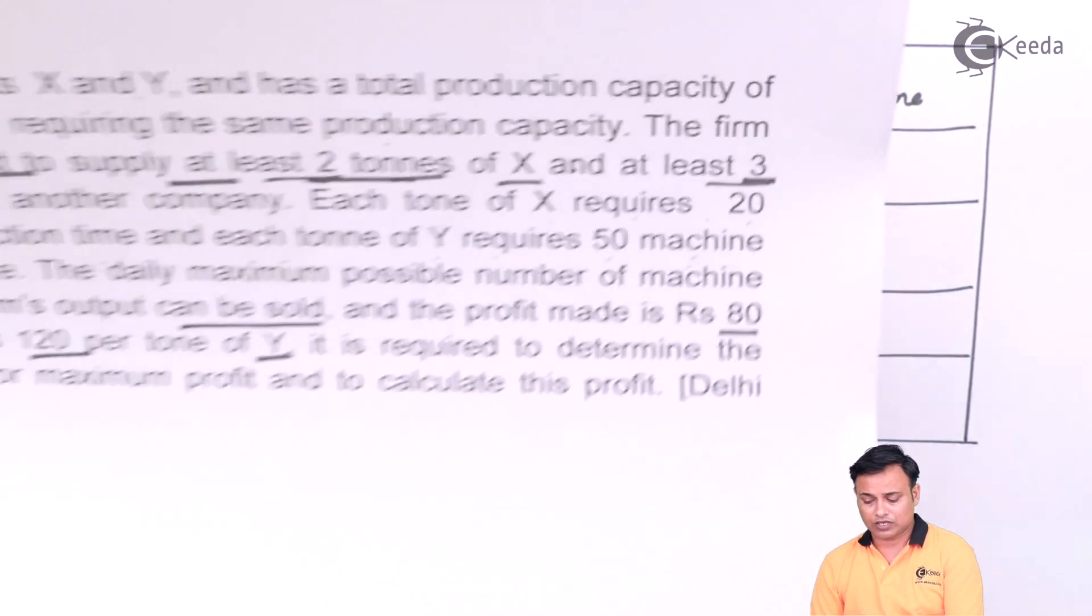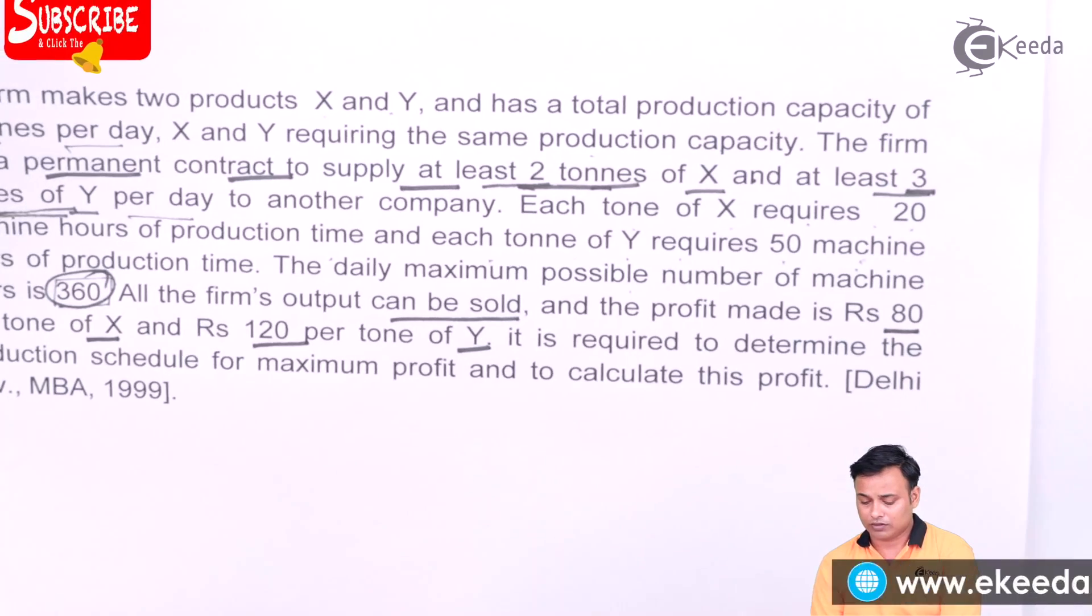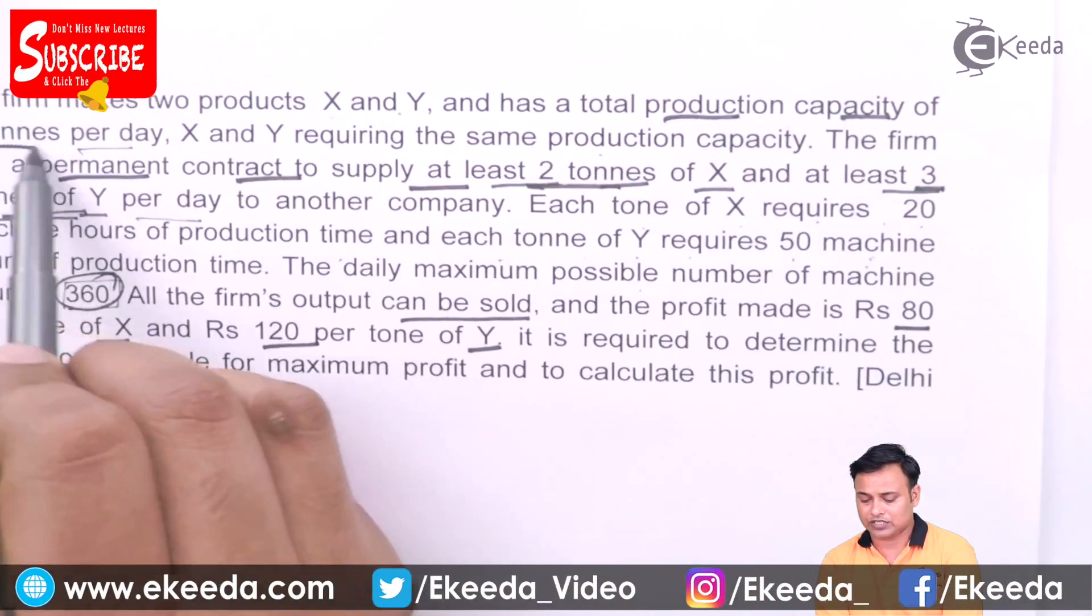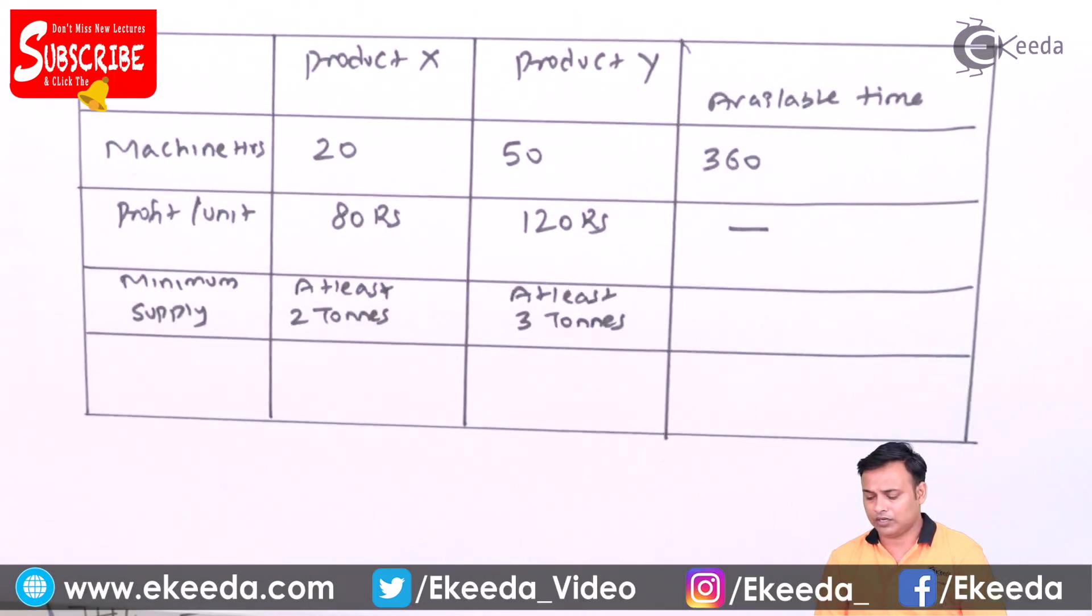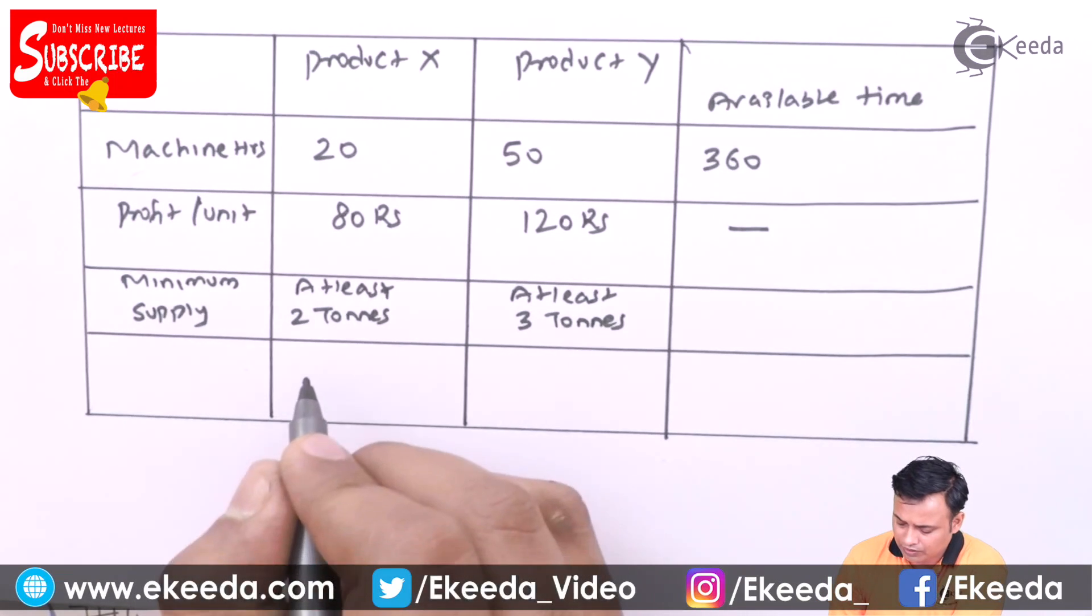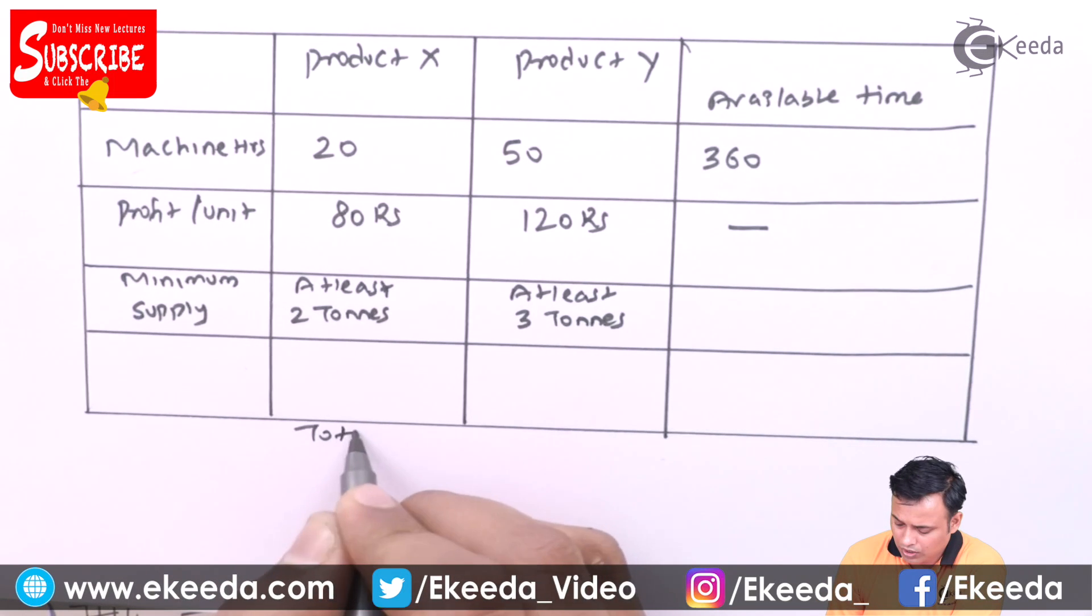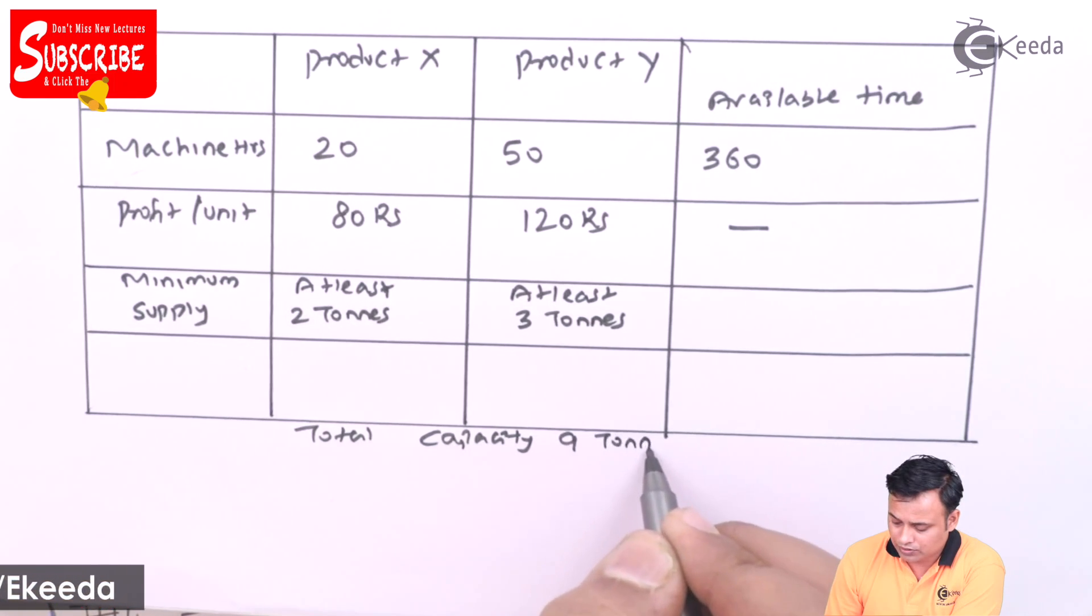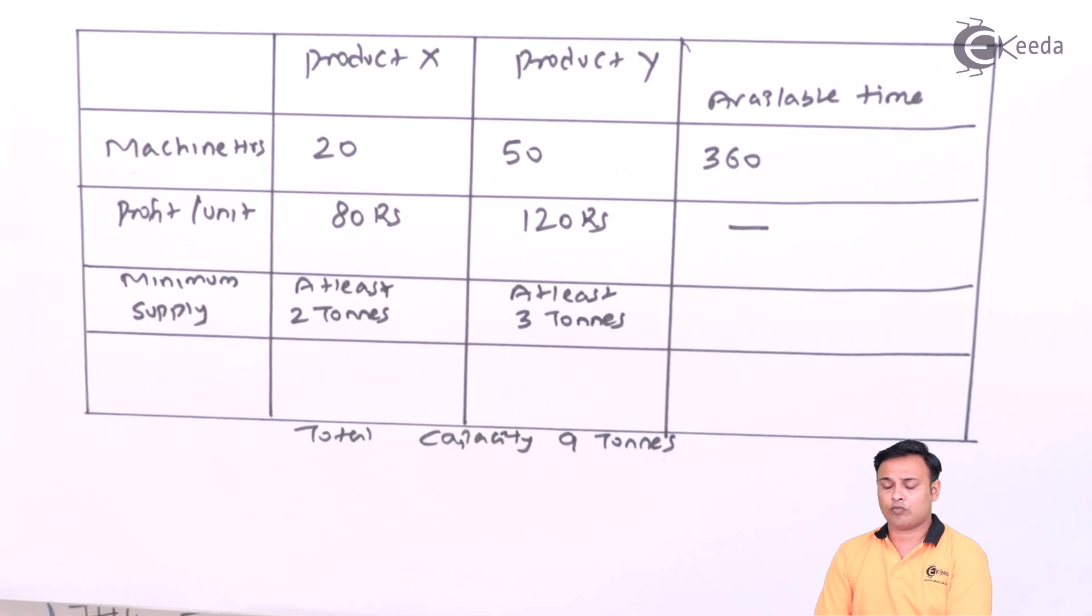So we are done with the tabulation. The total production capacity of nine tons per day. So the total capacity is nine tons. Overall you can't make more than nine tons per day because that is beyond your capacity of the machines or the setup.